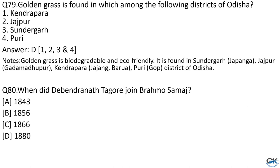Question No. 79: Golden grass is found in which among the following districts of Odisha? 1. Kendrapada. 2. Jajpur. 3. Sundargarh. 4. Puri. The answer is all four: 1, 2, 3, and 4. Golden grass is biodegradable and eco-friendly. It is found in Sundargarh, Jajpur, Kendrapada, and Puri districts of Odisha.